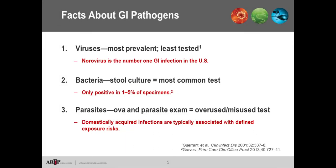Viruses are the most prevalent but the least tested. Norovirus is the number one GI infection across the United States, typically associated with outbreaks but can also be sporadic. As for bacteria, stool culture is the most used test in the clinical lab, though the return on investment is quite low — anywhere between 1% to 5% of specimens are actually positive, and that's geographically and method dependent.